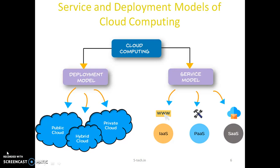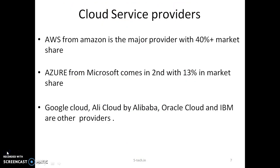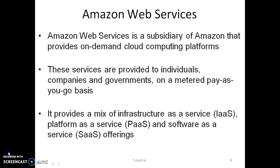Let's look at cloud service providers globally. AWS — Amazon Web Services — is the major provider with more than 40% market share, followed by Azure from Microsoft at approximately 30%, followed by other providers like Google Cloud, Alibaba Cloud, Oracle, IBM, and others. Amazon Web Services is a subsidiary of Amazon that provides on-demand cloud computing services to individuals, organizations, and government institutions.